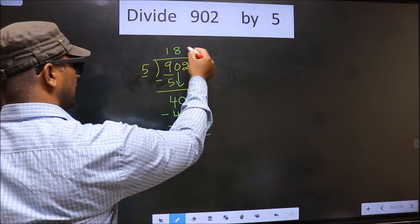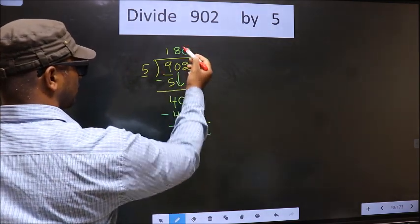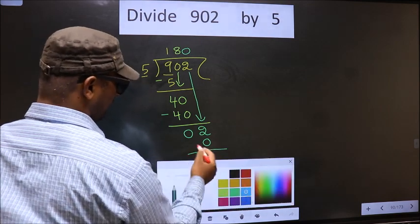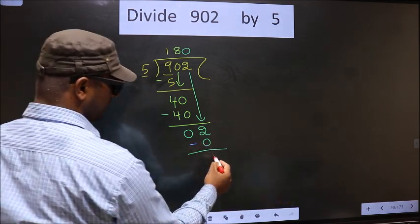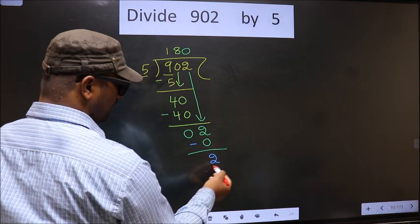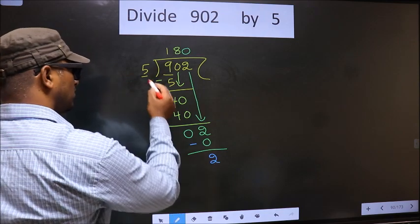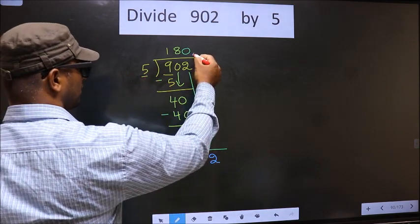So 5 into 0 is 0. Now you subtract 2 minus 0 is 2. Now over here we did not bring any number down, and 2 is smaller than 5.